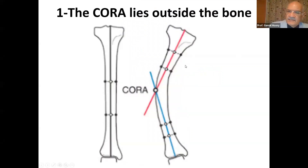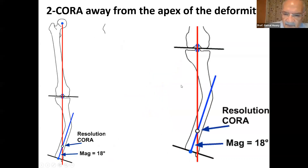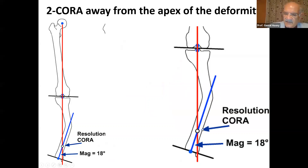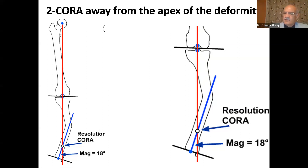But if the CORA lies outside the bone — we have the proximal axis and distal axis and they didn't meet in the middle of the bone, they met outside the bone — that is the second situation. We have an obvious CORA, and it's crystal clear. But if we draw the mechanical axis of the proximal segment and the mechanical axis of the distal segment, they are going to meet here — away from the apparent CORA. The CORA is far away from the apparent CORA, which means we have another CORA; it's not only one. We have two CORAs.